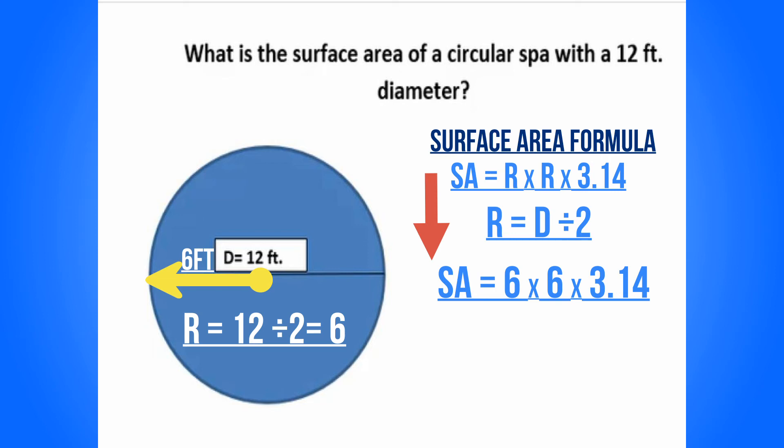So you're going to take 6 times 6 times 3.14, and if you plug that into your calculator, you'll get an answer of 113.04 square feet.